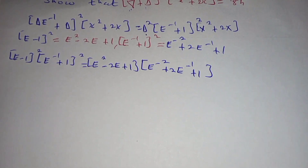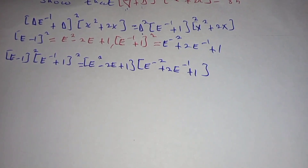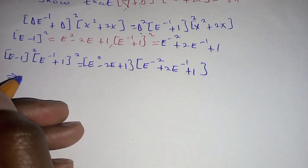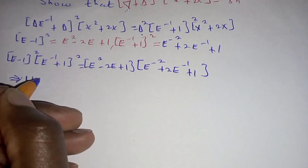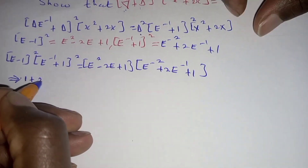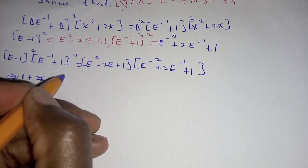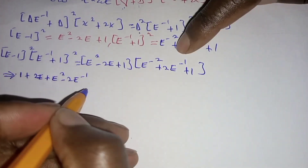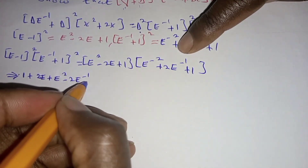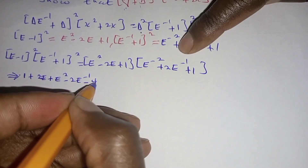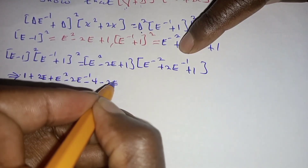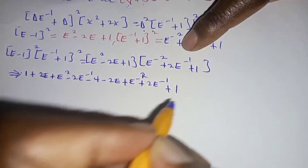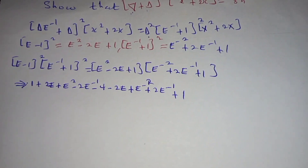So we expand that to obtain the following. It is equivalent to one plus two E plus E squared, minus E, minus four, minus two E plus E. This is negative two, plus one, plus one. Now what I have done is I have multiplied these terms out.